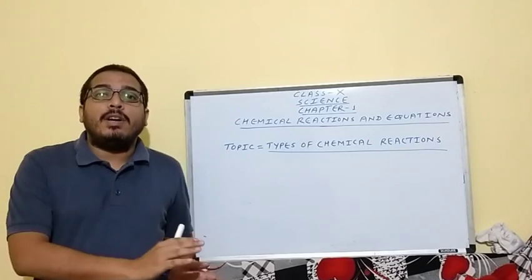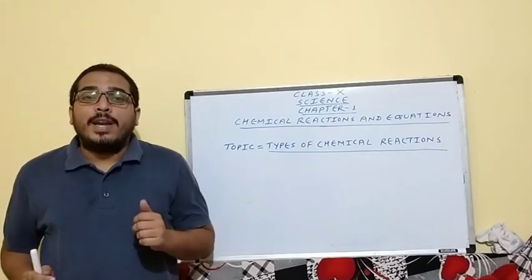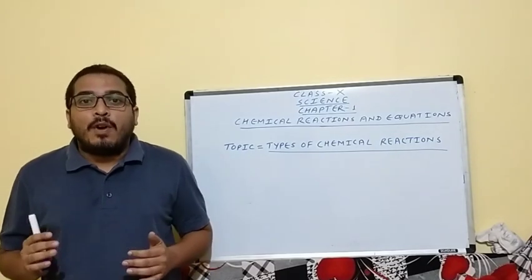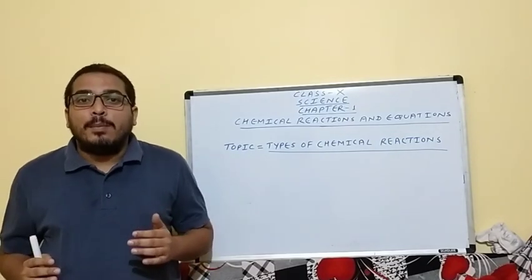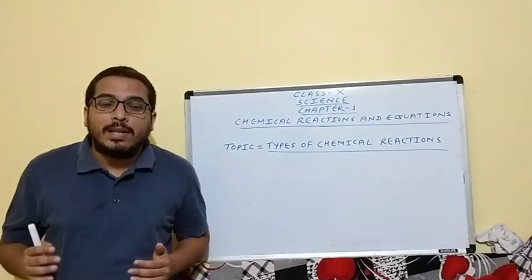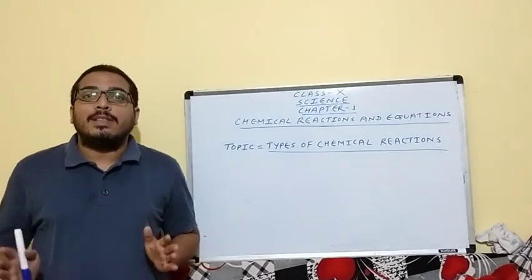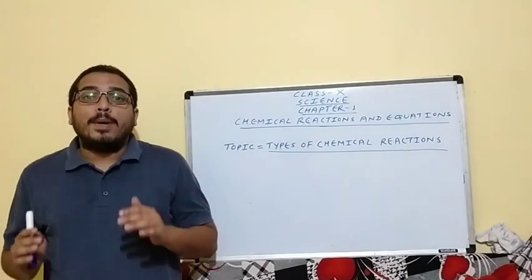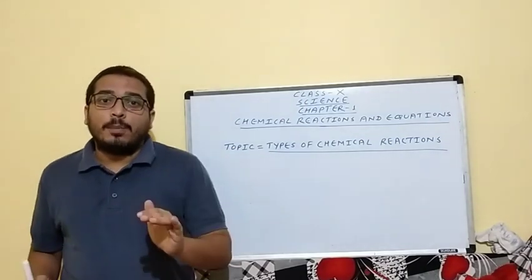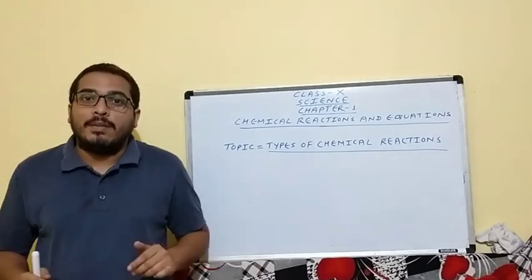Yesterday I already gave you one question to solve: when aluminium sulphate reacts with barium chloride it will form aluminium chloride plus barium sulphate. How can this reaction be balanced? I am sure you attempted to balance that chemical equation. But before starting the next topic, I want to balance that equation once again in front of you.